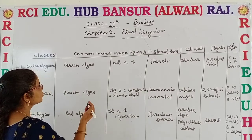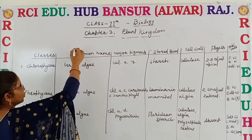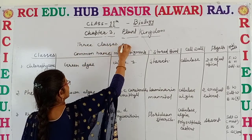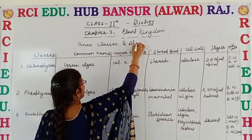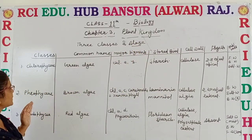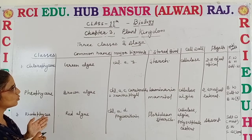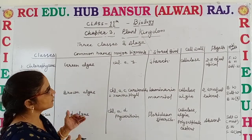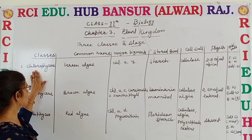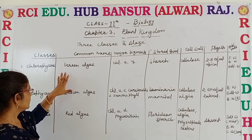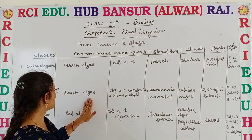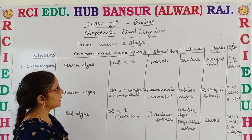Through a table we will discuss about the three classes of algae — Chlorophyceae, Phaeophyceae, and Rhodophyceae — and do a comparative study of all their common characteristics. Their common names: Chlorophyceae is known as green algae, Phaeophyceae is known as brown algae, and Rhodophyceae is known as red algae.